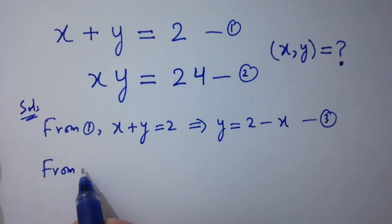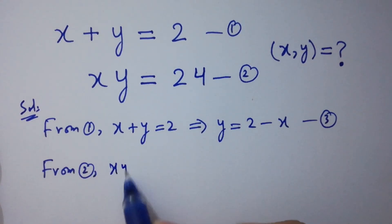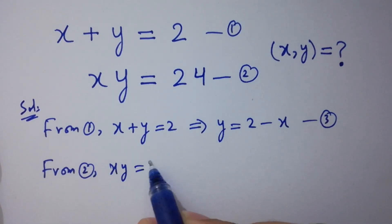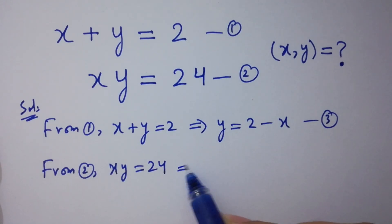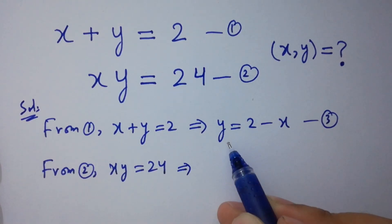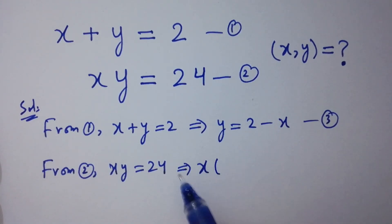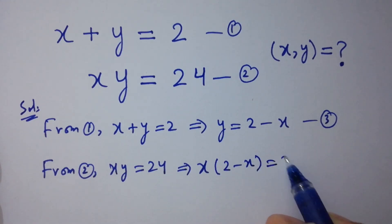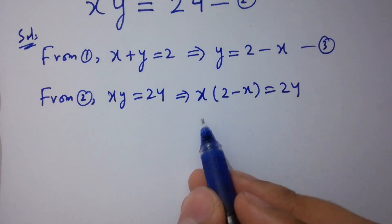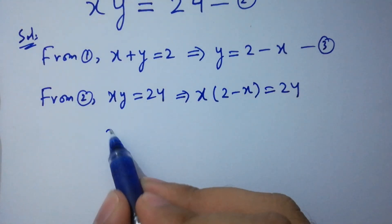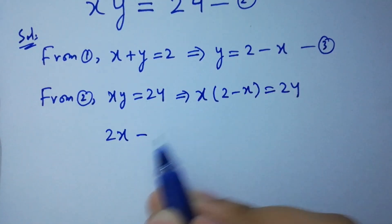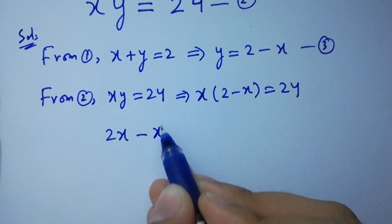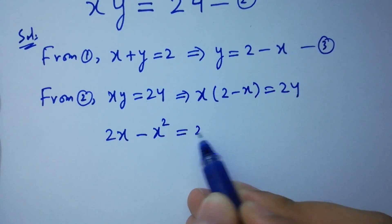From the second equation, xy equals 24. Put the value of y: x times (2 minus x) equals 24, which gives us 2x minus x squared equals 24.